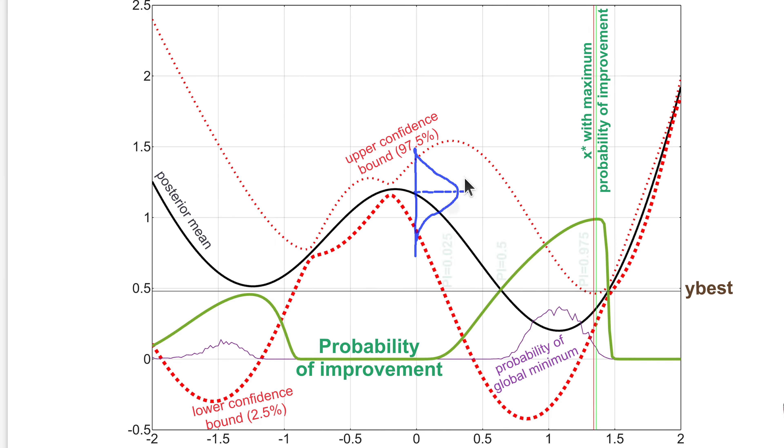In here, we will have a very low probability of improvement. In here, this lower confidence bound, then we will have a 2.5% probability of improvement. In here, we have a 50% probability of improvement. And in here, we have a 97.5 probability of improvement. And in this green vertical line, we have the maximum probability of improvement of 98%.